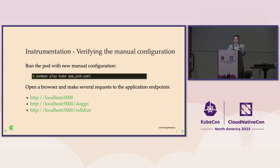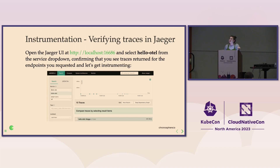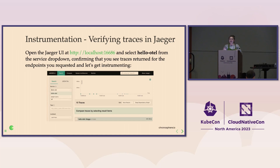You'll know it's working if you can load up Jaeger at localhost 16686. You don't have to select Hello Hotel from the menu, but Jaeger also instruments itself, so you will see Jaeger query pop up as a service. We really care about the Hello Hotel spans, so go ahead and select Hello Hotel as a service, and confirm that you see traces that reflect the requests you were making to the application. And when that is all said and done, we are ready to add some manual instrumentation.